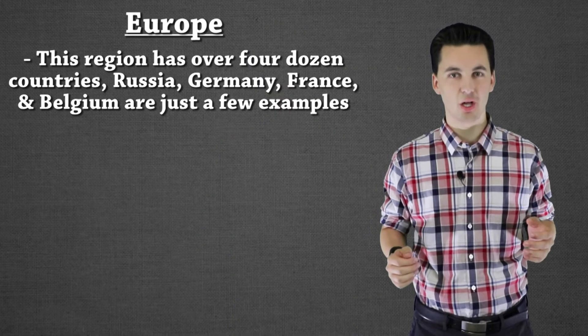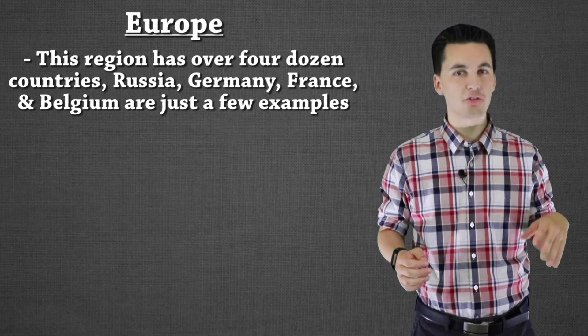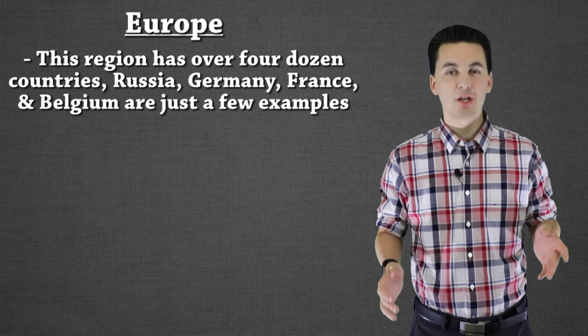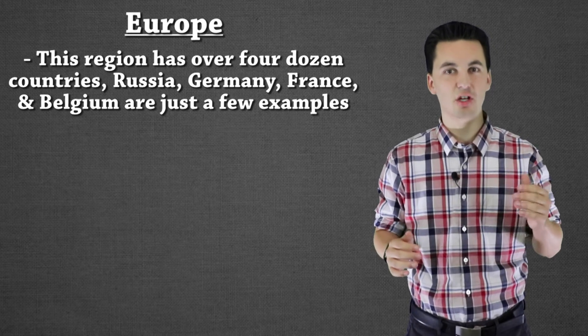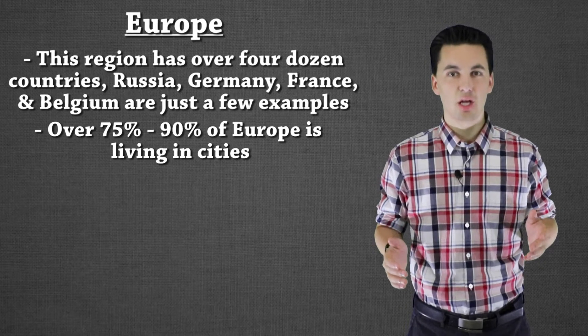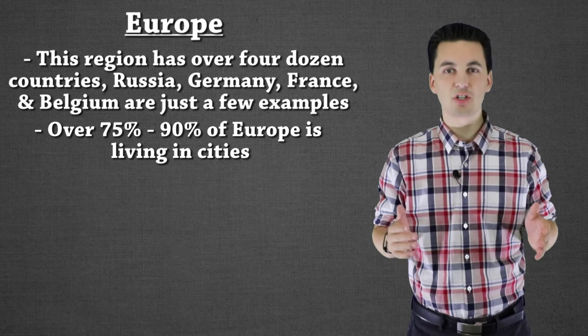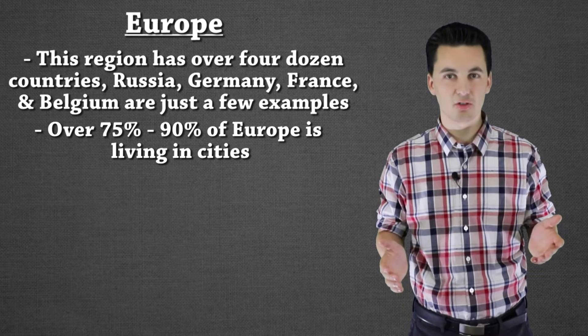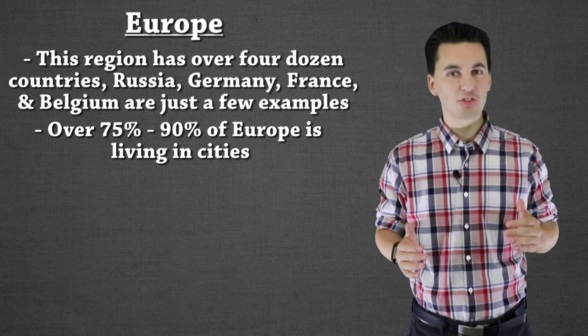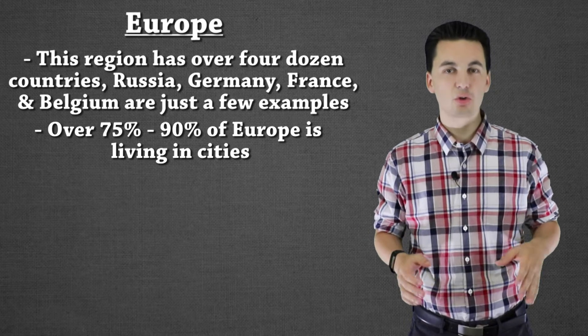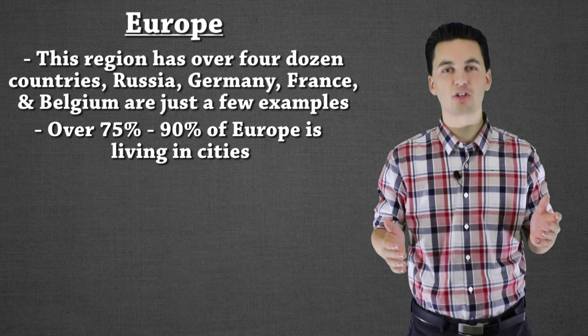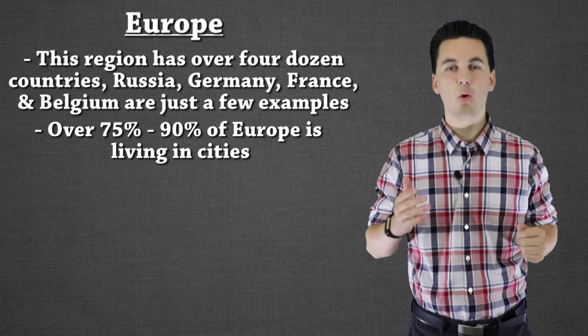Our next population cluster is Europe. This is a huge region — there are over four dozen countries here, including Russia, France, and Spain as just a couple of examples. This area is very unique compared to Asia. Here we have heavy urbanization — it's estimated that around 75 to 90% of the population now lives in cities. We're seeing a decrease in population growth and less focus on agriculture, with more focus on industrialized and service jobs.